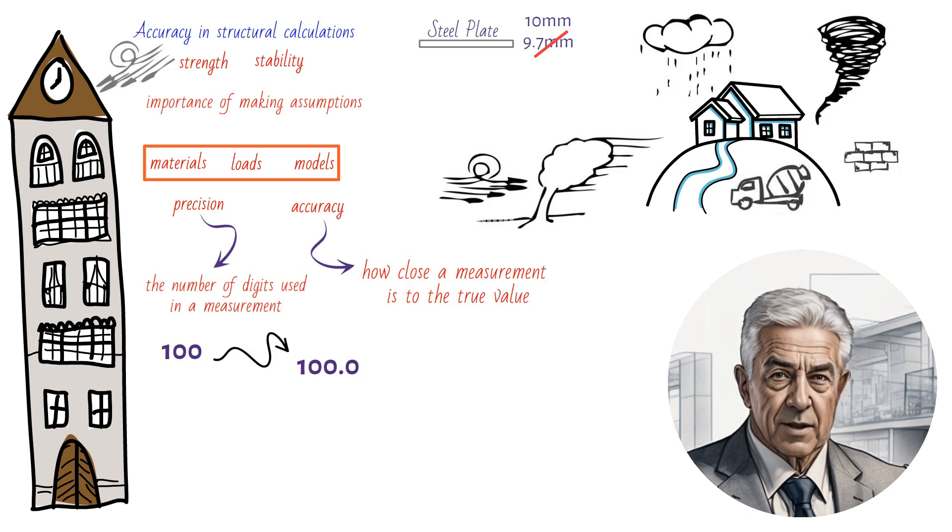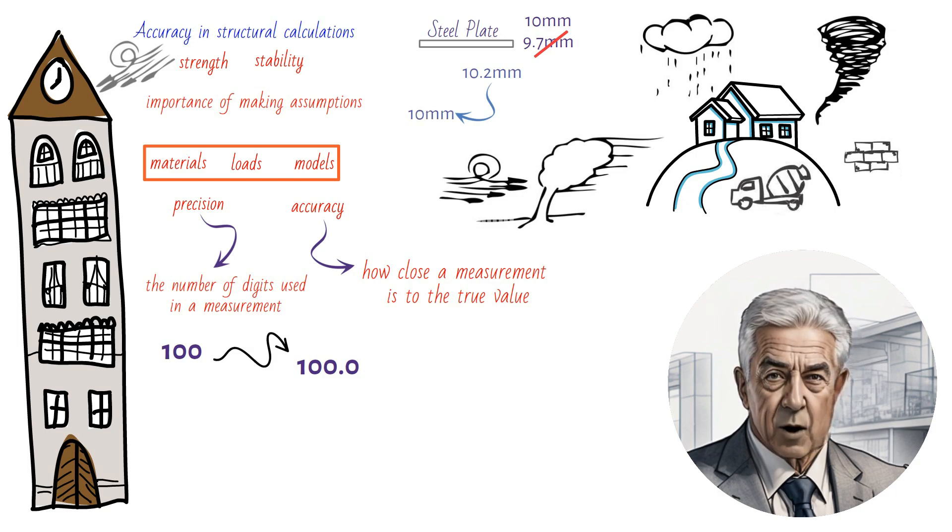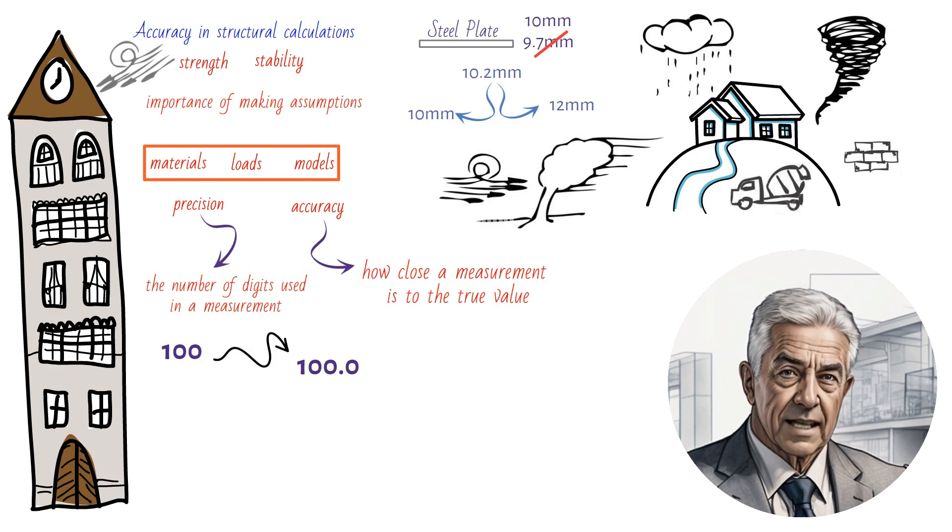A difficult decision is sometimes needed if the calculations indicate a thickness of, say, 10.2 mm. Should a thickness of 10 mm be specified or the next size up of 12 mm? In general, it is prudent to play it safe and round up. It is important to note that safety should always be the top priority when making these decisions.